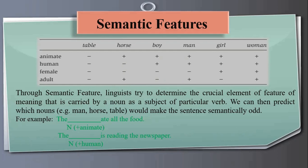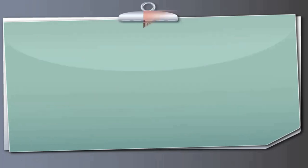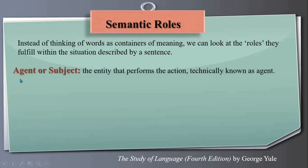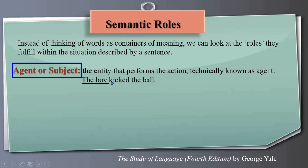Now let's discuss semantic roles in sentences. This is taken from The Study of Language, fourth edition, by George Yule. Instead of thinking of words as containers of meaning, we can look at the roles they fulfill within the situation described by a sentence. The first role is agent or subject — the entity that performs the action, technically known as the agent. For example, in 'The boy kicked the ball,' the boy is the agent and plays the subject role.